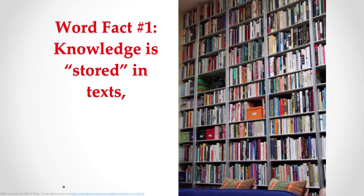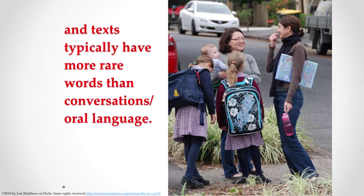The first fact is that human beings store their knowledge in text. Humans are the only species that have a record of ideas and knowledge gained over thousands of years living on Earth. Texts are the place where this knowledge is kept. Typically, the language of text is more sophisticated than that of oral language. A children's book, like A Very Hungry Caterpillar, can have up to two times the number of rare words that might be heard in a conversation between adults.